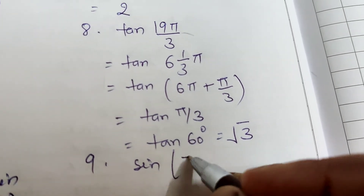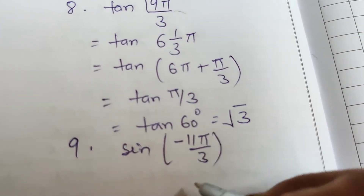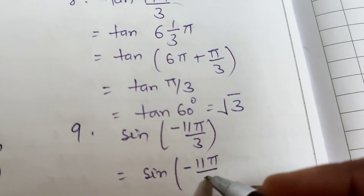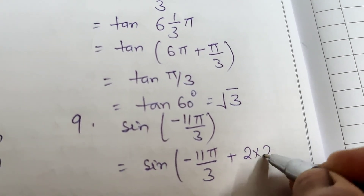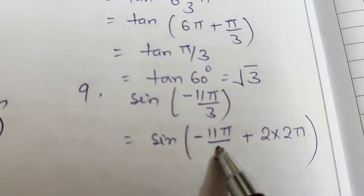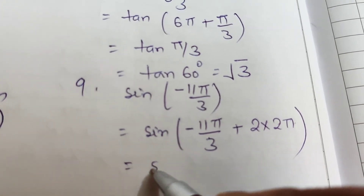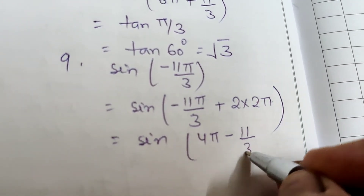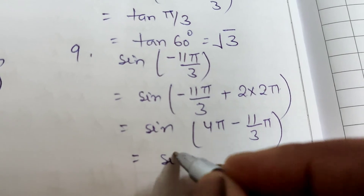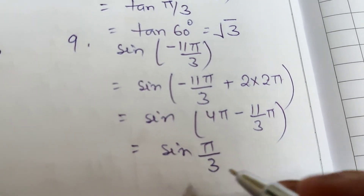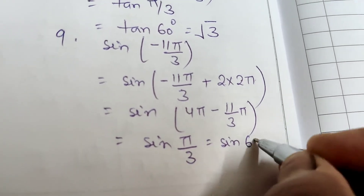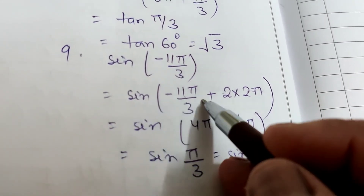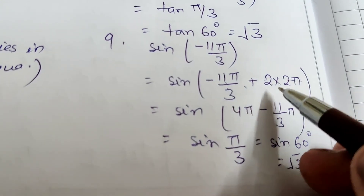Question 9: sin(-11π/3). We add 4π to bring it into range: -11π/3 + 4π = (-11π + 12π)/3 = π/3. So sin(-11π/3) = sin(π/3) = sin 60° = √3/2. This uses the identity sin(2π + x) = sin x.